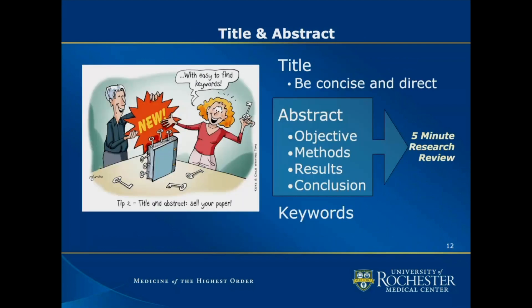Lastly, you write the title and abstract. The title should be very concise and direct — if it's too long, readers scanning PubMed may not read it. Use key words that draw readers into the paper. The abstract is the last thing you write because you need to tell the whole story first. It should be structured with an objective, methods, results, and conclusion — sometimes using these as headings, which some journals require. This structure mirrors the five-minute research review. Keywords are also very important as they help PubMed and NIH librarians index your article so it reaches the right audiences.